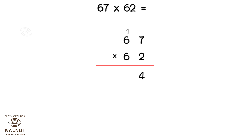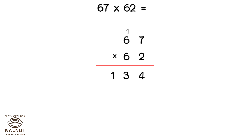Here we add the 1, which becomes 13. Since there are no more digits to multiply, we write 13 below the line. Since we have already added the 1, we strike it out.